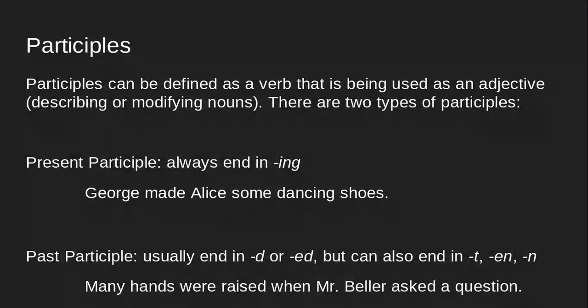There are two specific types of participles. The first one is a present participle, and these always end in -ing. They're kind of a giveaway — if you can find the -ing word in your sentence when you're having to look for participles, chances are you might have a present participle.